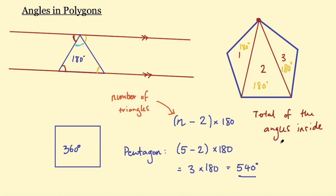If you're told it's a regular polygon, you can then use that formula to work out what one angle will be. I hope you found this useful — I went through it quite quickly but it is an important topic. So hopefully you're understanding it, or this video has triggered you to do more research on the topic. Leave a like if you found it useful, or leave a comment letting me know what you thought. Thank you for watching. Bye.